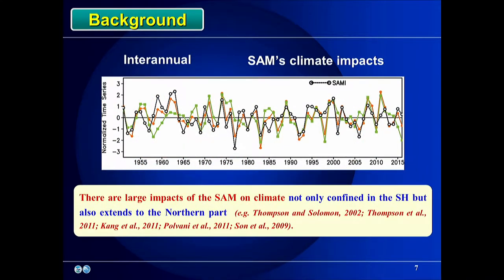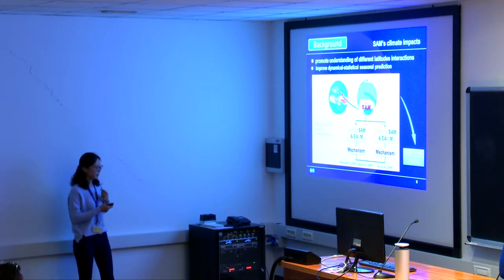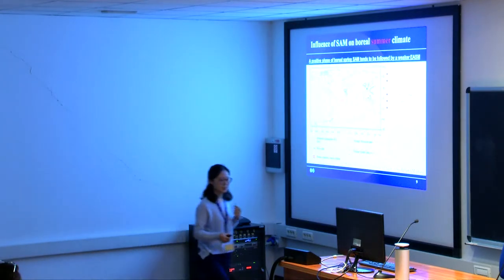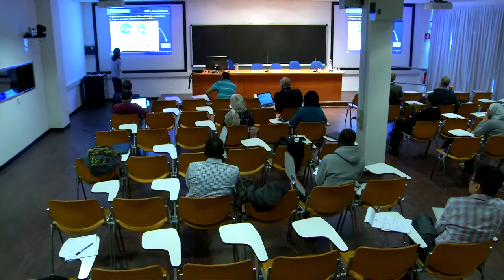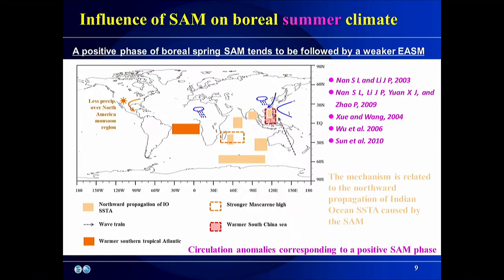Today, my topic mainly concentrates on interannual timescale and tries to investigate the SAM's climate influence. Previous studies found that the boreal spring SAM could influence the East Asian summer monsoon, and the boreal autumn SAM could influence the East Asian winter monsoon. A positive phase of boreal spring SAM tends to be followed by a weaker East Asian summer monsoon, with the mechanism related to sea surface temperature anomalies caused by the SAM.